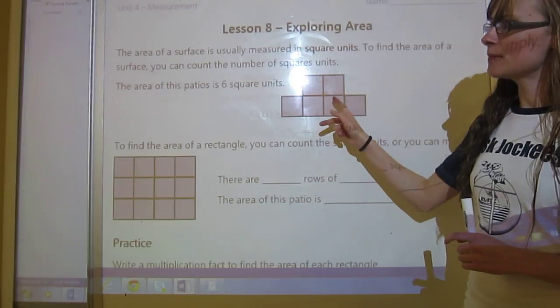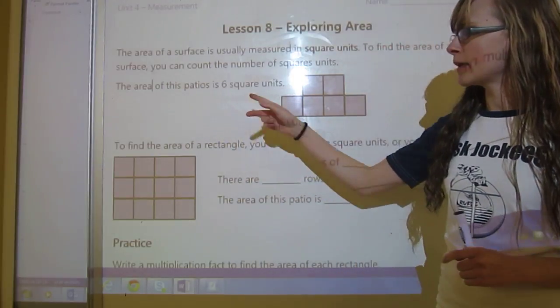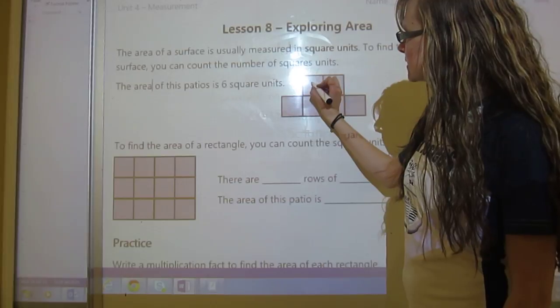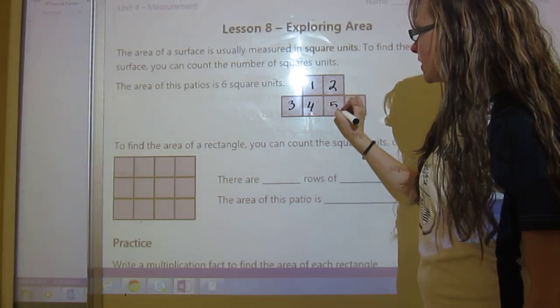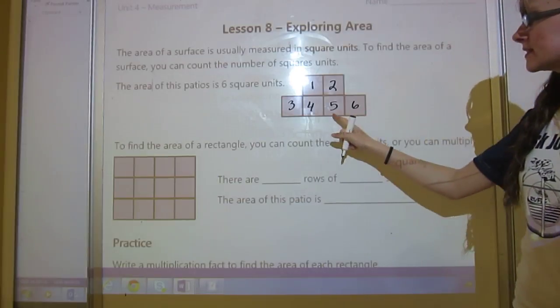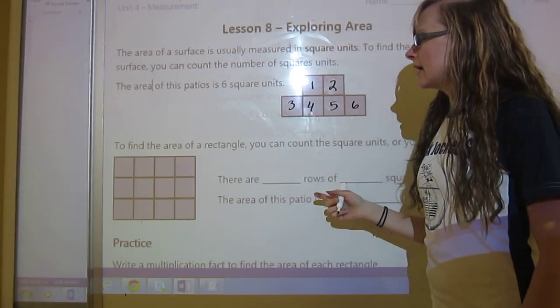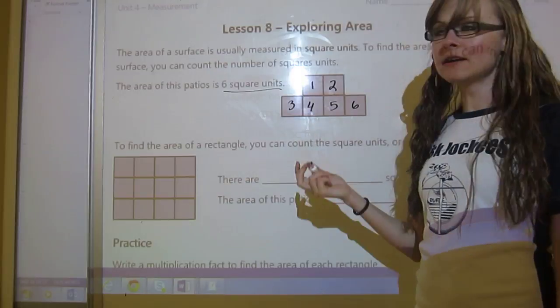So this is an example right here. The area of this patio is six square units, and the reason is because we've got one, two, three, four, five, six. There are six squares in it, so it's six square units. That's the area.